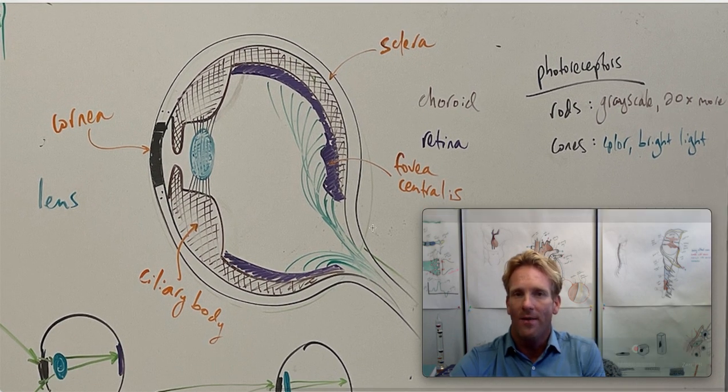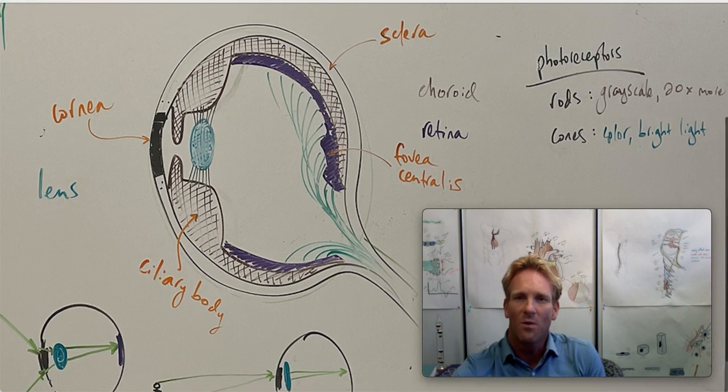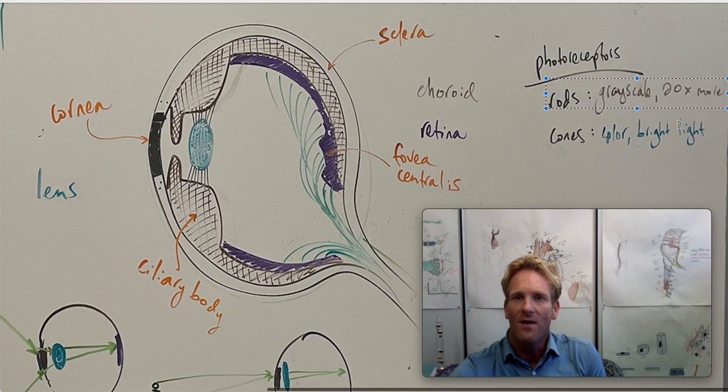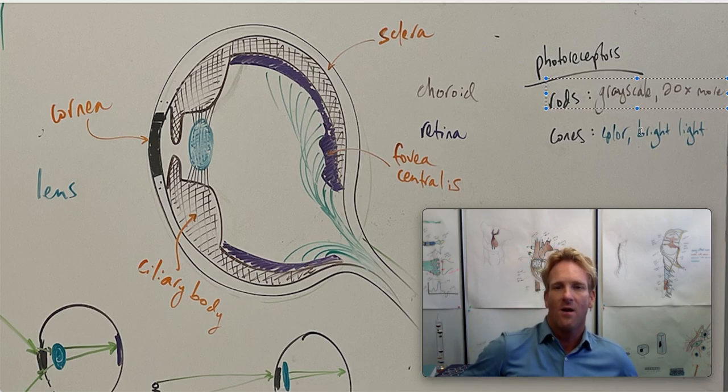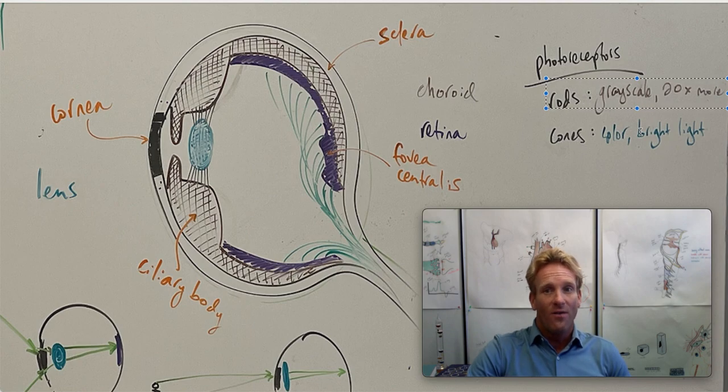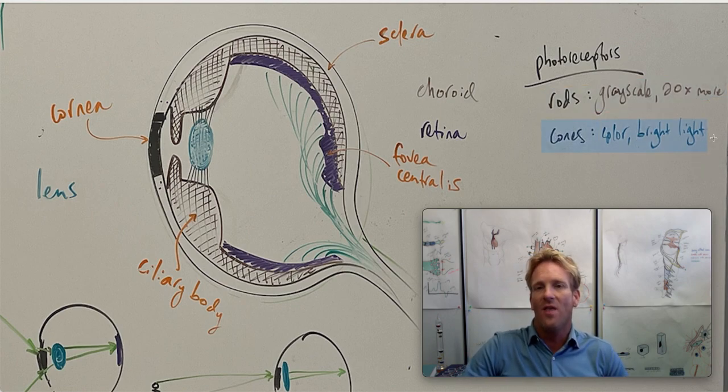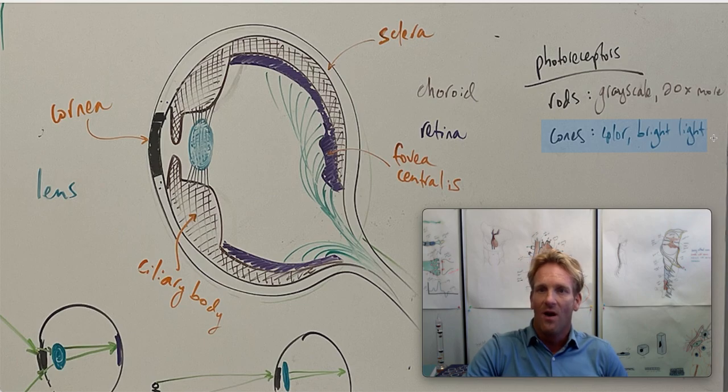A little bit more about the retina. The retina consists of two different types of photoreceptors. We have rods and cones. Rods are much more numerous. There's 20 times more of those. These rods encode light in grayscale, so they're not able to see colors. They also work really well in dim light. Cones are different because there's fewer of them. But cones allow you to see in color and they require bright light to be activated.